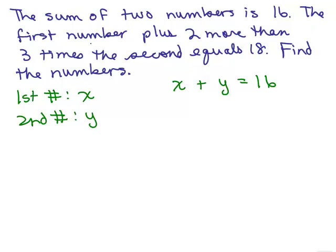The second one: the first number, plus two more than three times the second. So we're going to add something. We're going to add two more, which means add two to something. To what? Three times the second, but the second is y, so that's 3y. So x, the first one, plus two more than three times the second, equals 18.